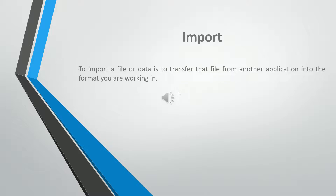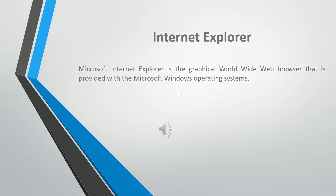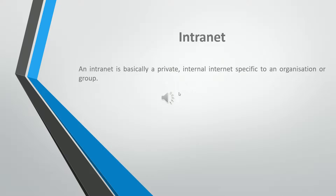To import a file or data is to transfer that file from another application into the format you are working in. The internet is a set of interconnected networks which allow computers in different locations to exchange information. The internet includes services such as the World Wide Web, Electronic Mail, File Transfer (FTP), Chat, and remote access to networks and computers. Microsoft Internet Explorer is the graphical World Wide Web browser provided with the Microsoft Windows operating systems. An internet service provider (ISP) is a company which provides access to the internet. An intranet is basically a private, internal internet specific to an organization or group.